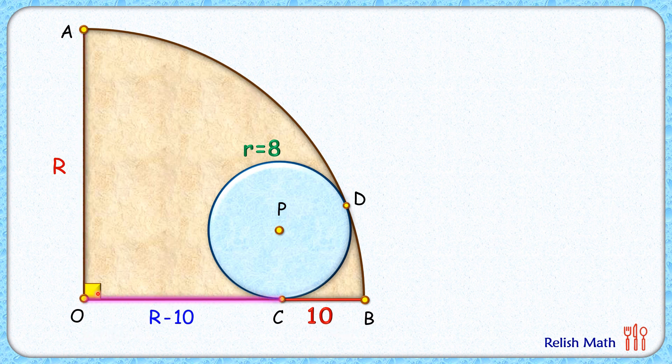We know that when two circles are touching each other, then their centers—that's point O and P—and the point of contact, that's point D, they lie in a straight line. Now here, PD length is the radius of the blue circle, or 8 centimeters.